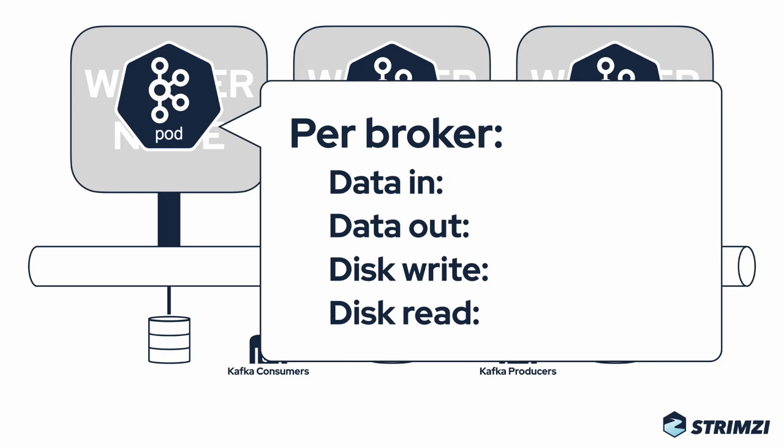If you have a producer sending data at 30 megabytes per second to the cluster, then on average each broker will receive 10 megabytes of data per second. If we have three different consumer groups consuming this data, then the broker needs to send this data at 30 megabytes per second to each of them. But there's also the replication — the data received on our broker needs to be sent to the other two brokers to keep their replicas up to date.